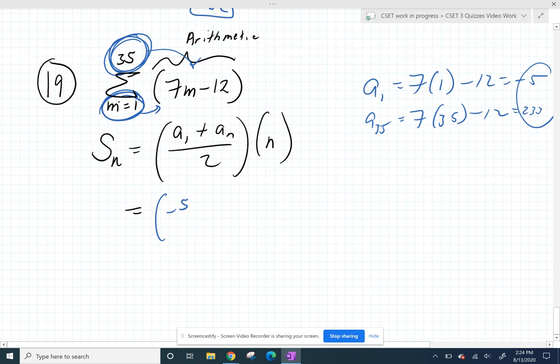So we're going to take the average of those. We're going to add them up and divide by how many we have and multiply that by how many terms we have. Since we're starting with the first term and stopping at the 35th term, we do have 35 terms.